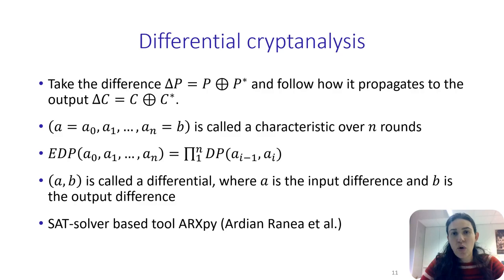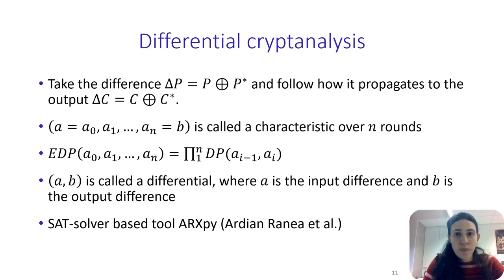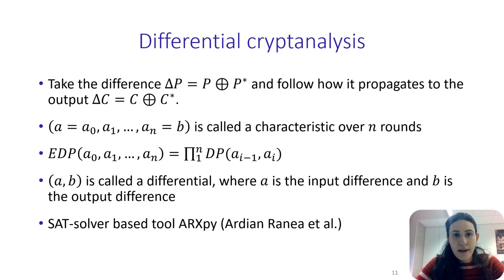In practice, we can often only observe the input and output differences, so we call the pair of input and output differences (A, B) a differential. Computing this probability is a very difficult task, since it is the sum of the probabilities of all possible characteristics with the same input and output mask. Therefore, what is done in practice is to bound this probability with the probability of the optimal characteristic. For our experiments, we use the SAT-solver-based tool ARX-PI to search for optimal characteristics over the Simeck S-box of the permutation in order to compute the differential probability of the S-box.